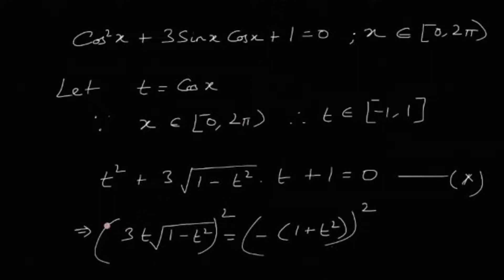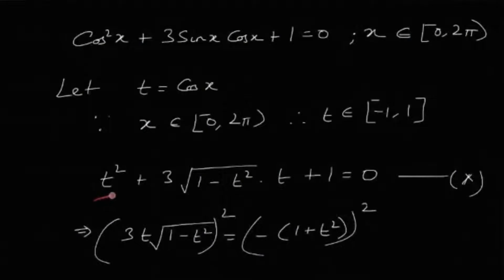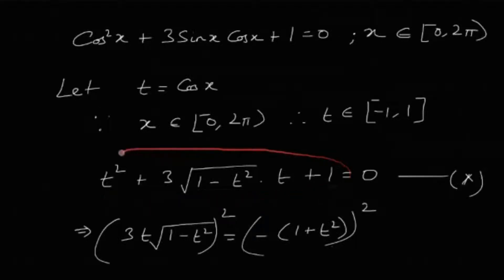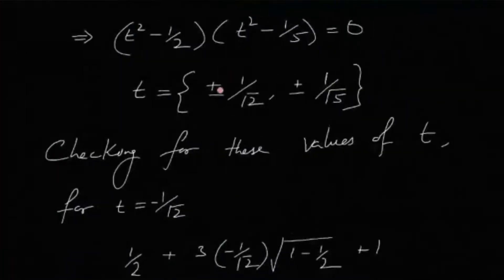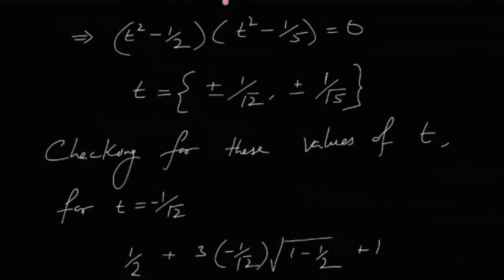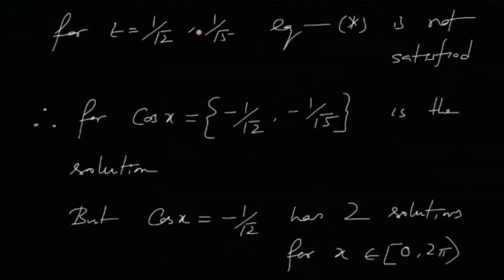We must check all solutions back in the original equation. Notice that t² is positive, and if t is positive, the entire LHS — t² + 3·√(1-t²)·t + 1 — is a positive quantity and can never equal zero. Therefore, t = +1/√2 and t = +1/√5 do not satisfy the equation. But for t = -1/√2 and t = -1/√5, the equation does hold.